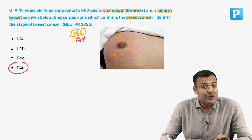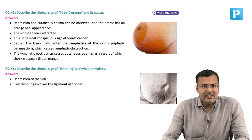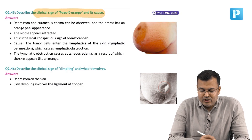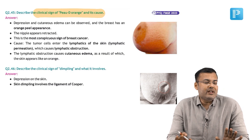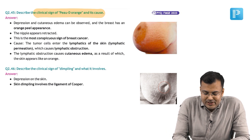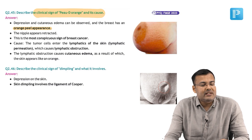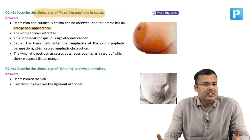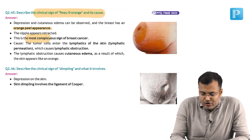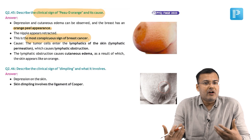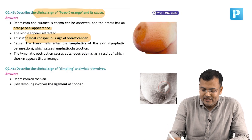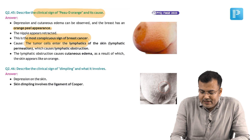Now see our rapid revision notes. In this image, you can notice that the patient is having peau d'orange. The question is: describe the clinical signs of peau d'orange and its cause. There is depression and cutaneous edema, and the patient has an orange peel appearance. It is the most conspicuous — also known as an obvious sign of breast cancer — and it is because of lymphatic permeation by tumor cells.